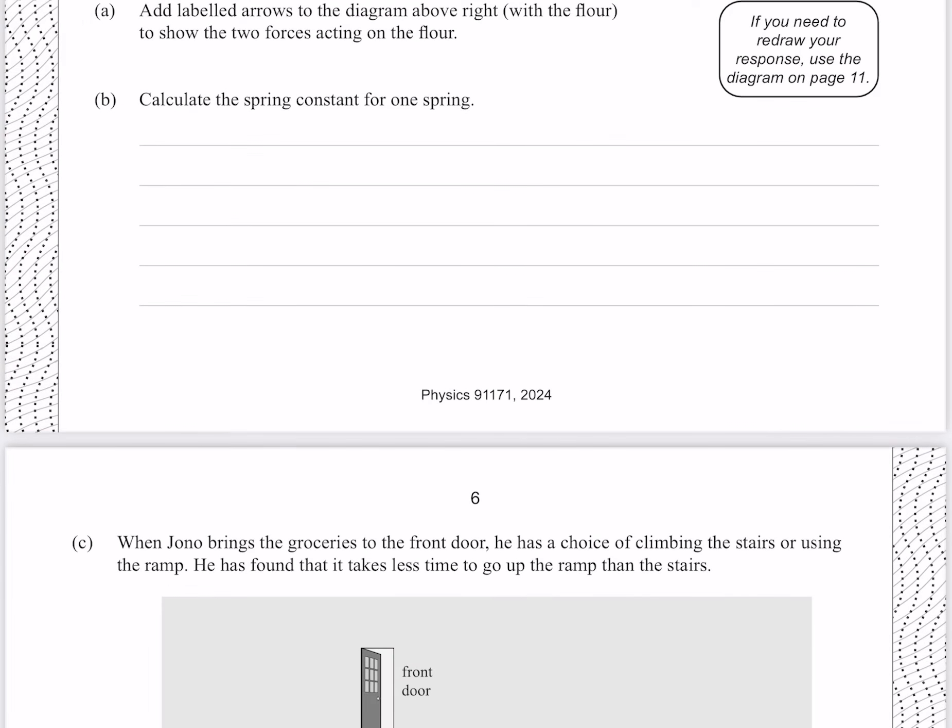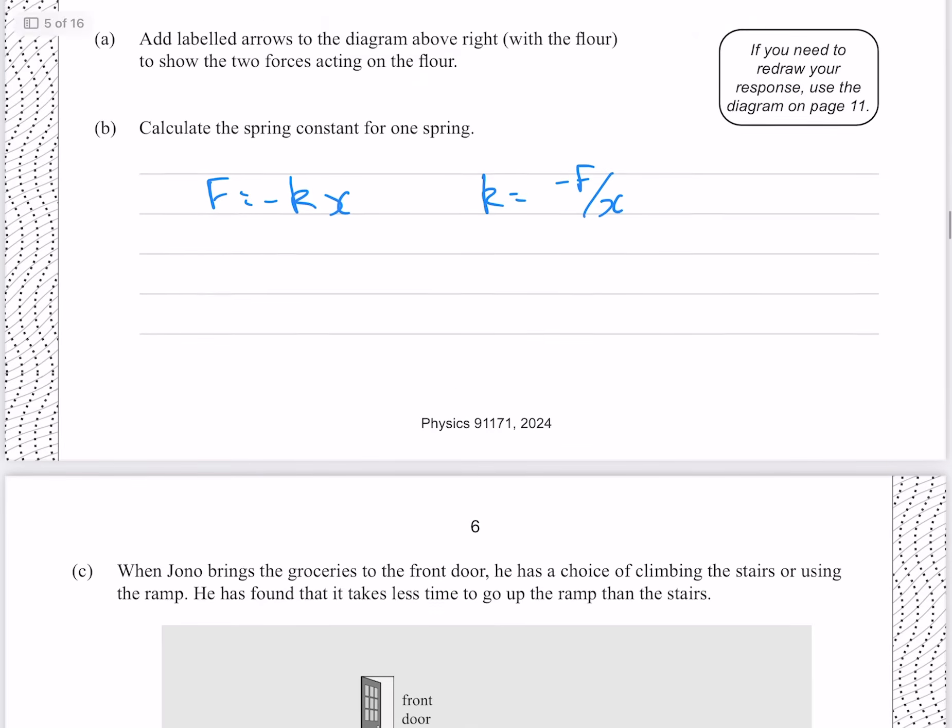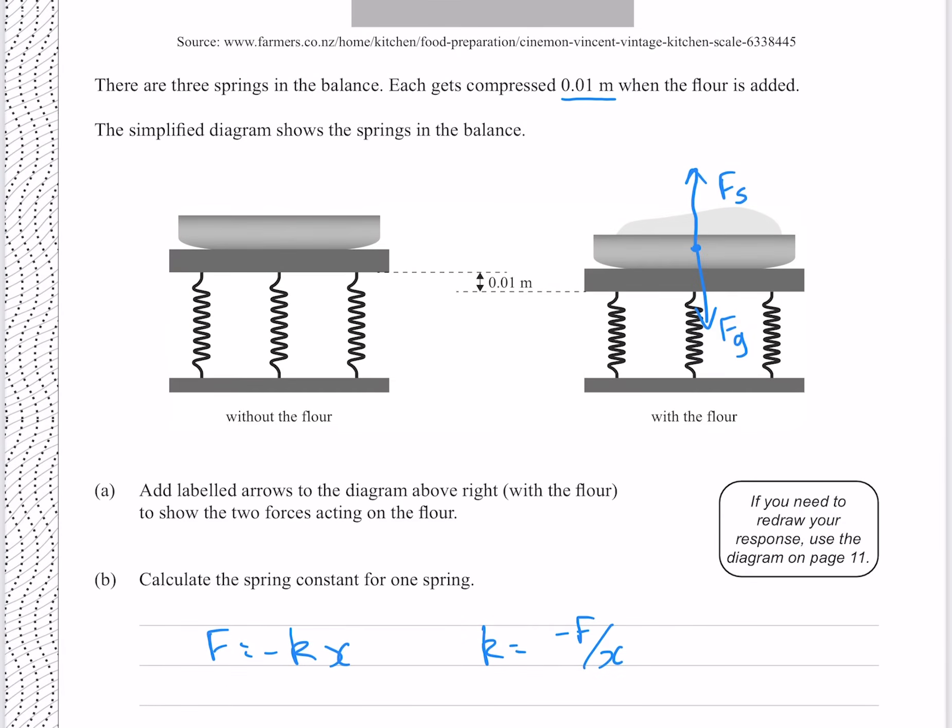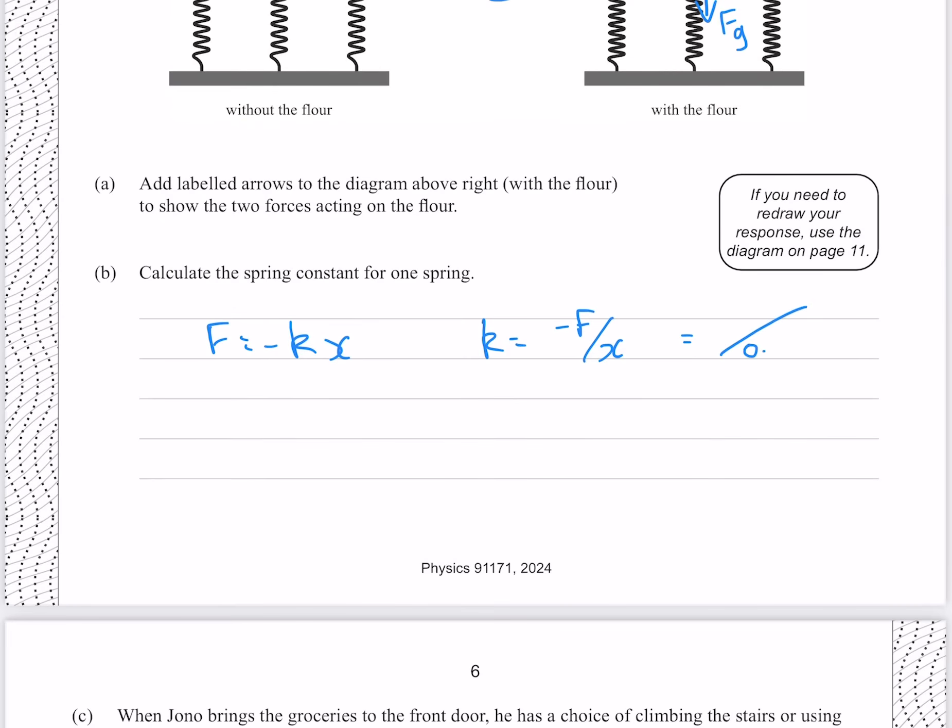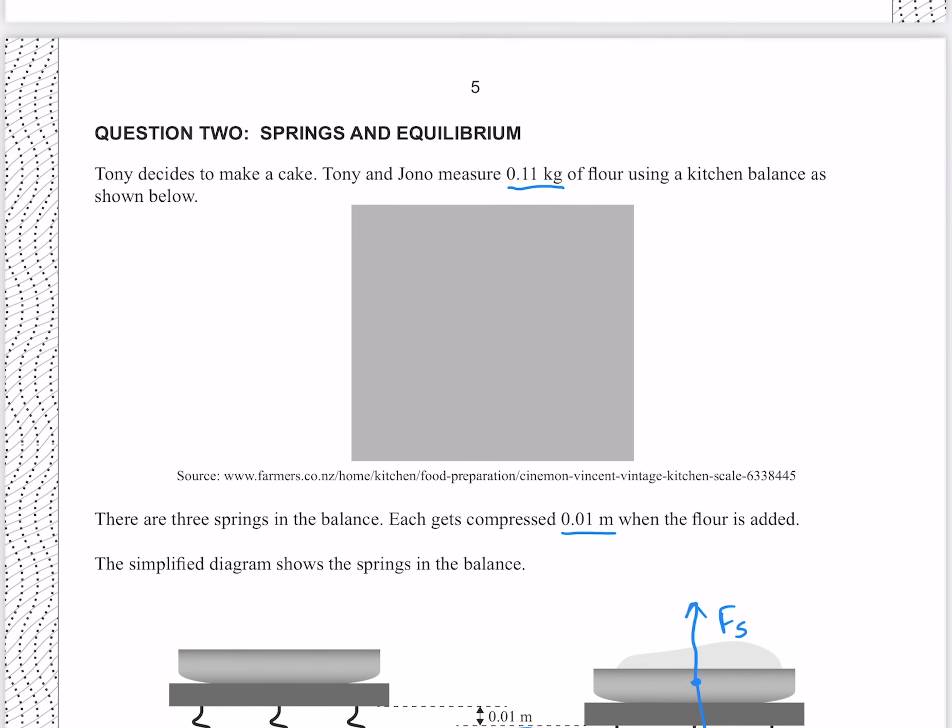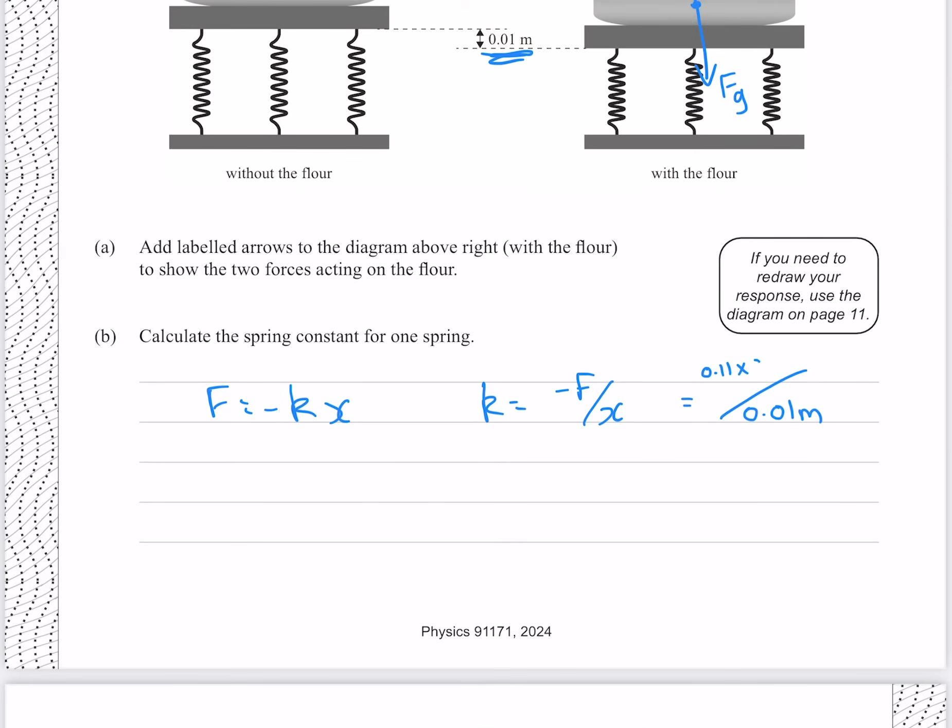Calculate the spring constant for one spring. Hooke's law tells us that the force is equal to negative kx, which means that k is equal to negative f over x. The negative sign is just because either our force or x must be negative, such that this negative will cancel out, and our final spring constant must be positive. We know that our spring is displaced by 0.01 meters, and we know our force is going to be our mass here, multiplied by the acceleration due to gravity, except because that force is distributed amongst three springs, we also need to divide it by three. Which gives me 36 newtons per meter to two significant figures.